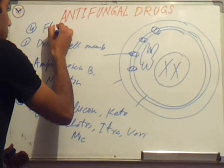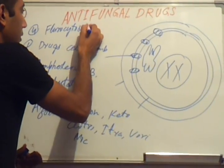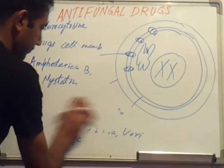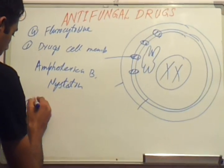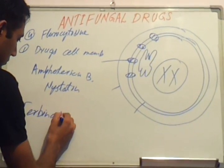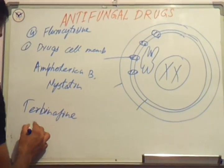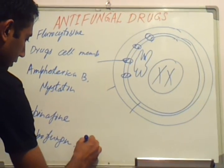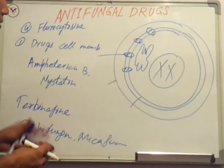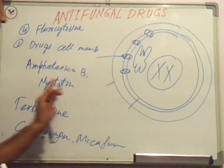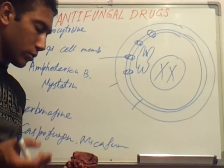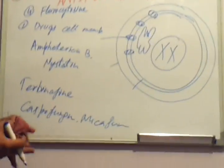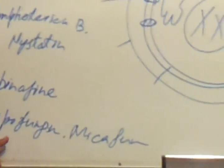A third class is nucleic acid synthesis inhibitors, with one drug called flucytosine, which acts on the nucleus. Next is terbinafine. Also caspofungin and micafungin. So the full list of antifungal drugs includes: Amphotericin B, nystatin, fluconazole, clotrimazole, ketoconazole, miconazole, itraconazole, voriconazole, flucytosine, terbinafine, caspofungin, and micafungin.